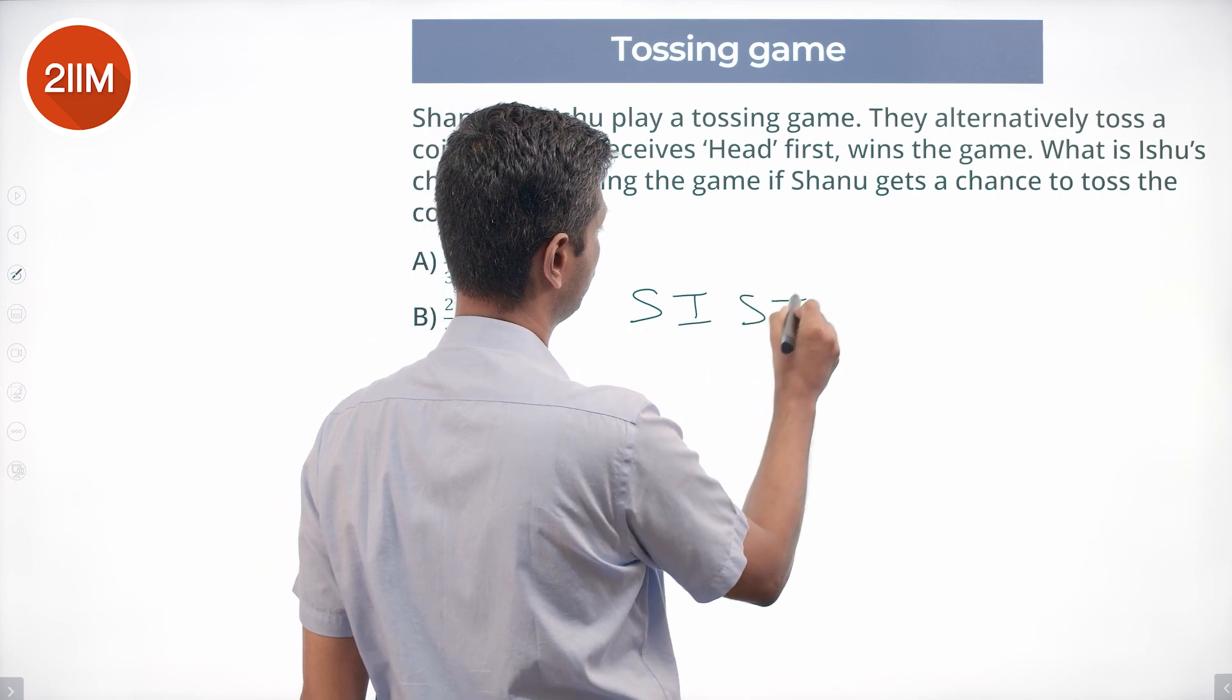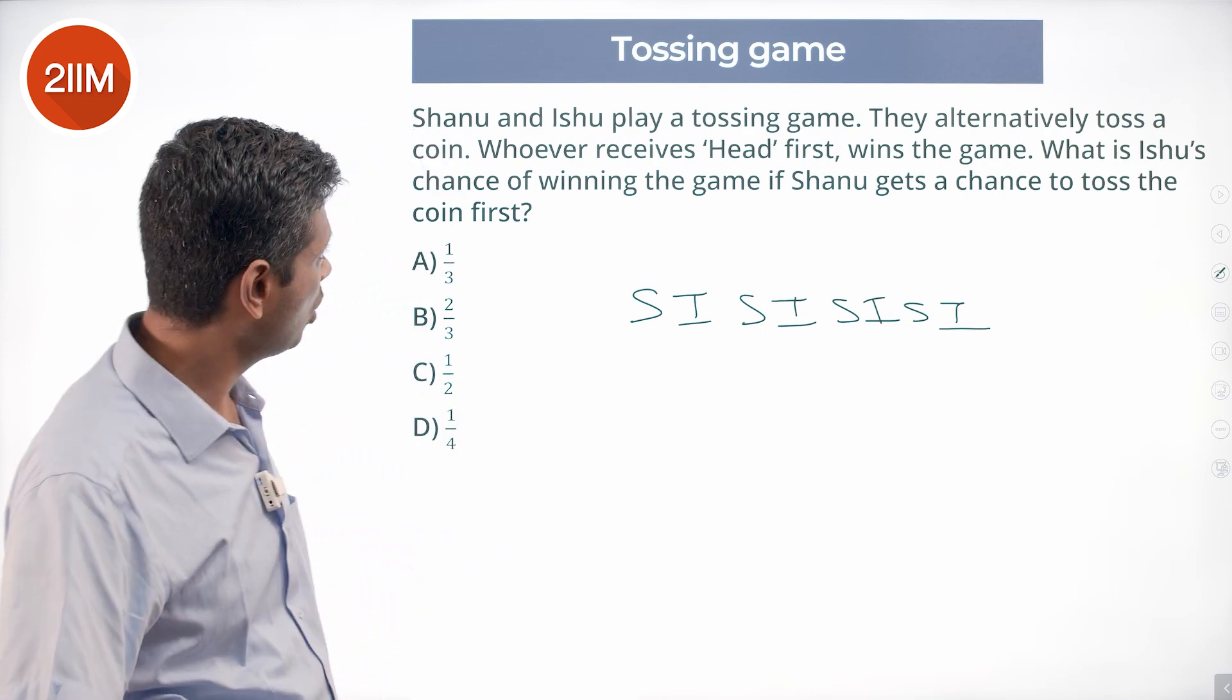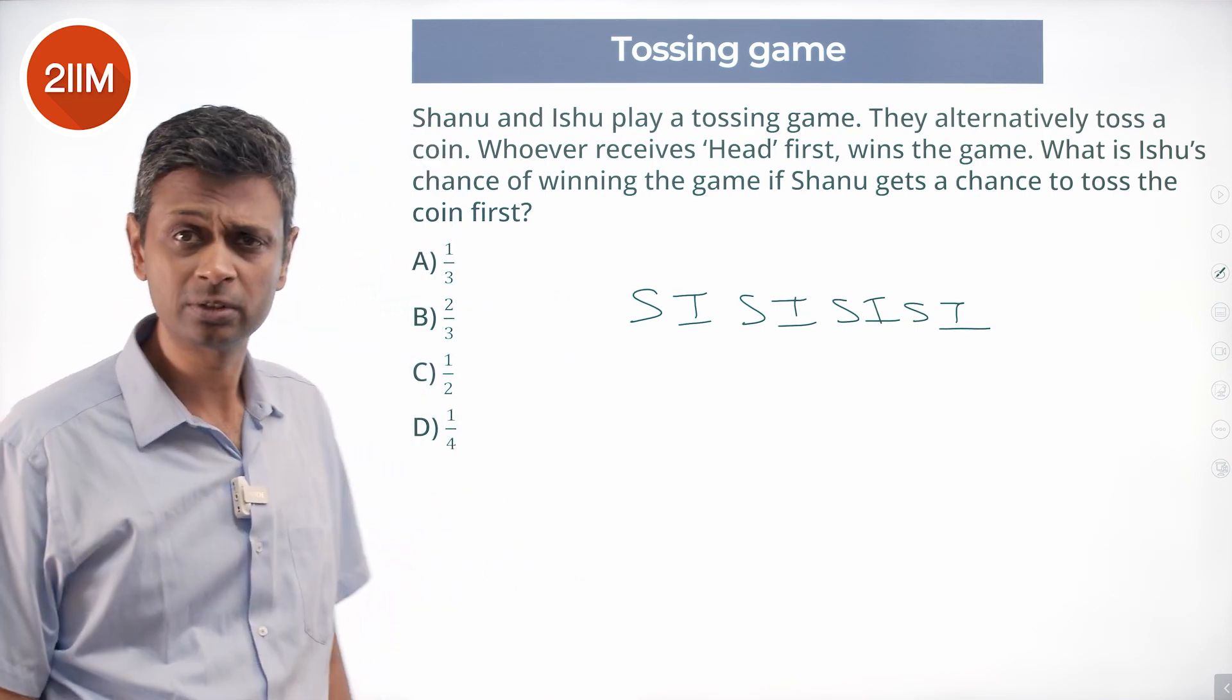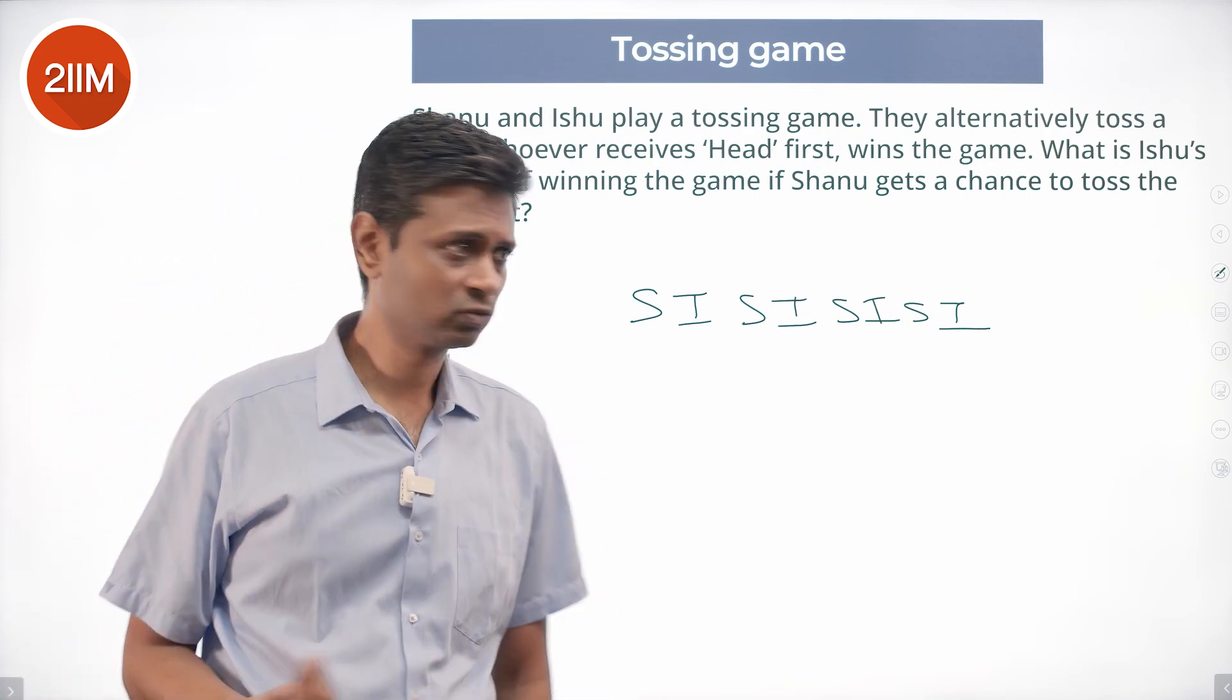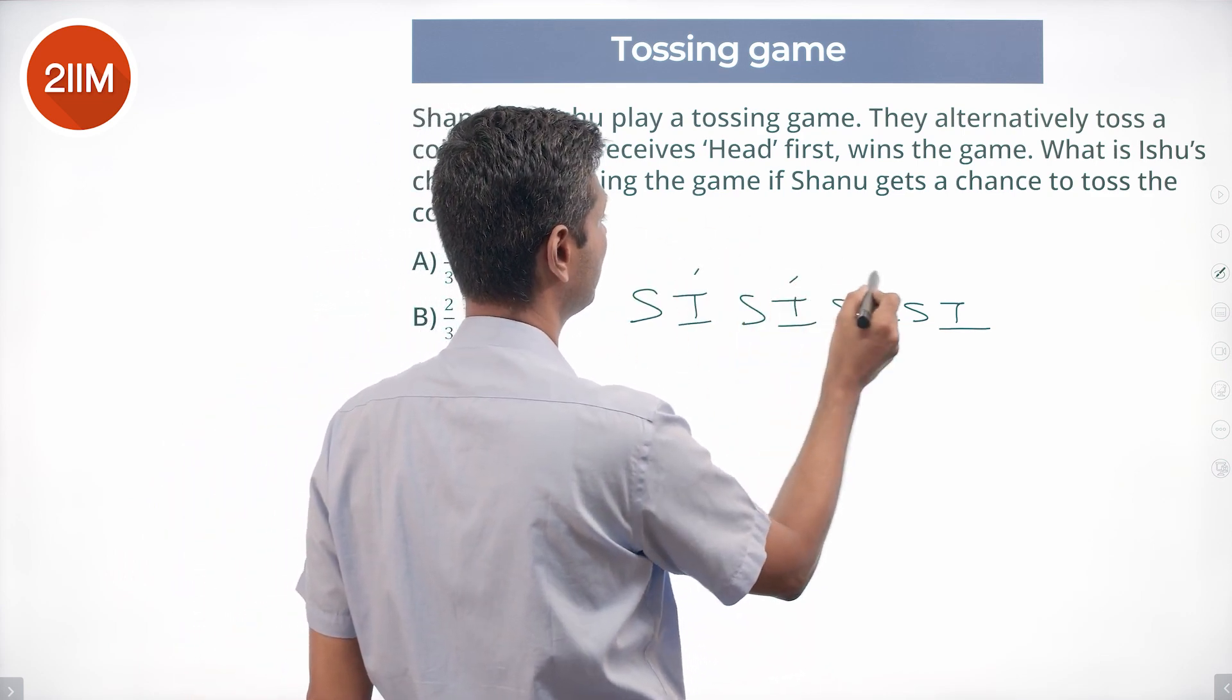Shanu first, then Ishu, Shanu, Ishu, Shanu, Ishu, and so on. Whoever gets heads first is the winner. So if Ishu has to win, then he or she can win in either this turn, this turn, this turn, or this turn.